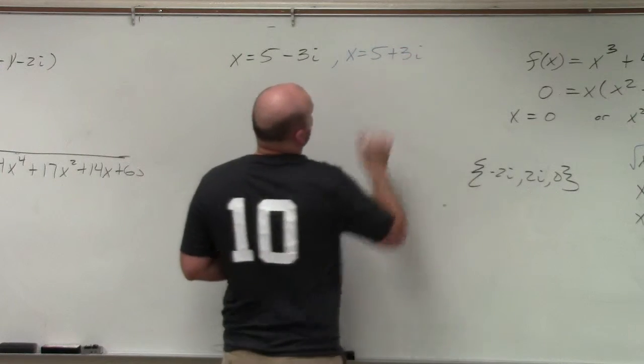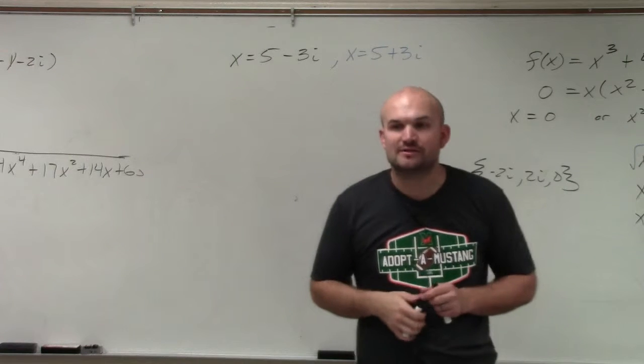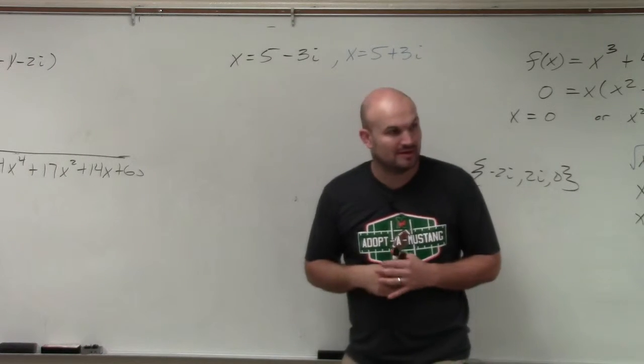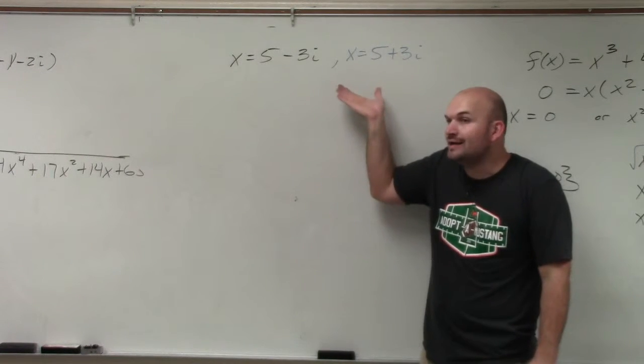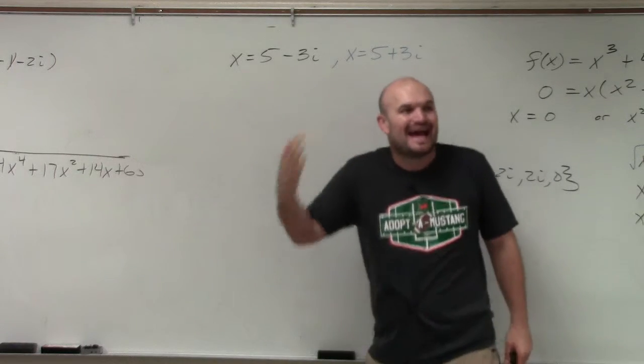That is hugely important when you're finding the zeros of a polynomial. Because if you were given one, you know the other one has to exist.